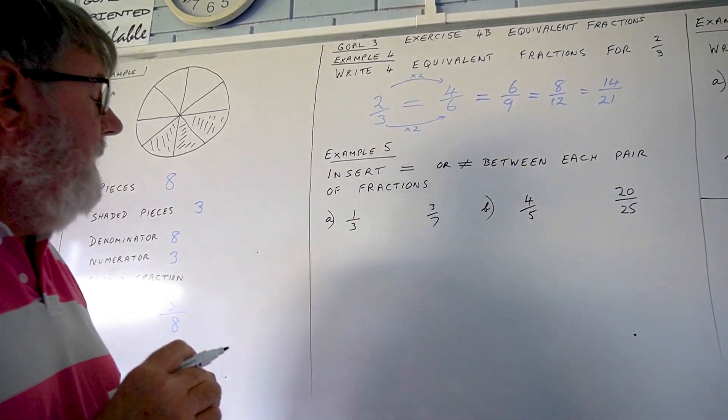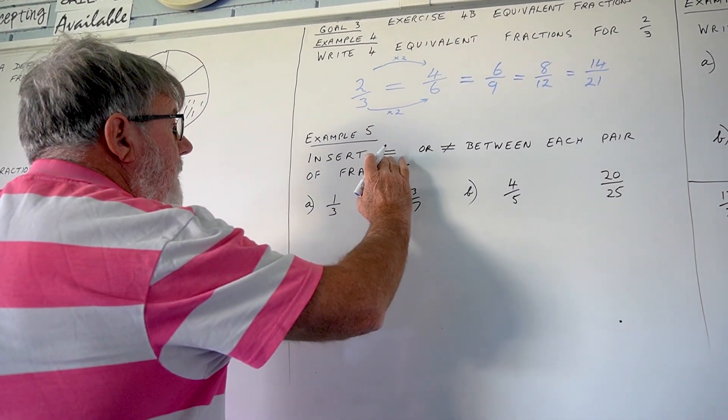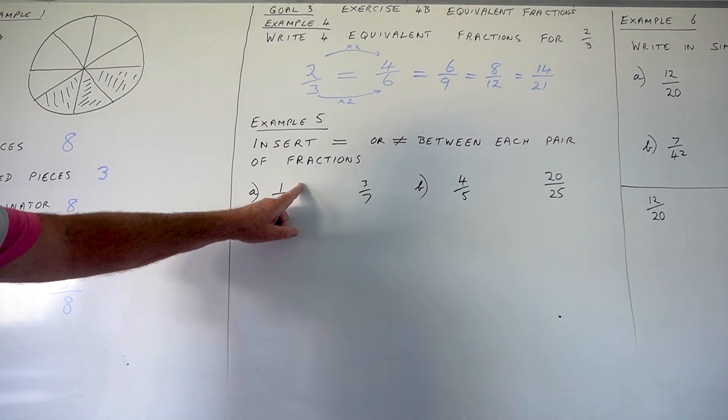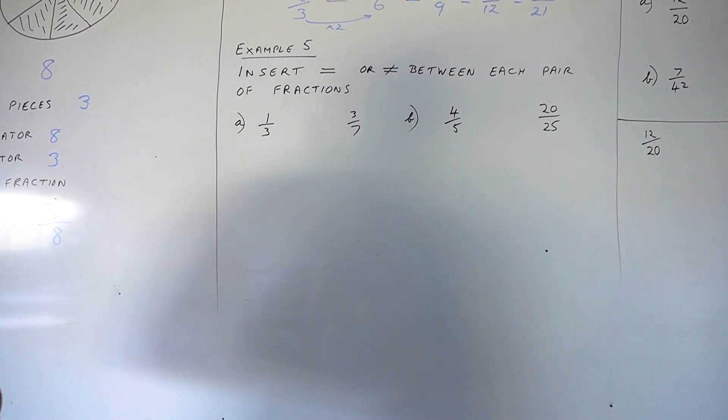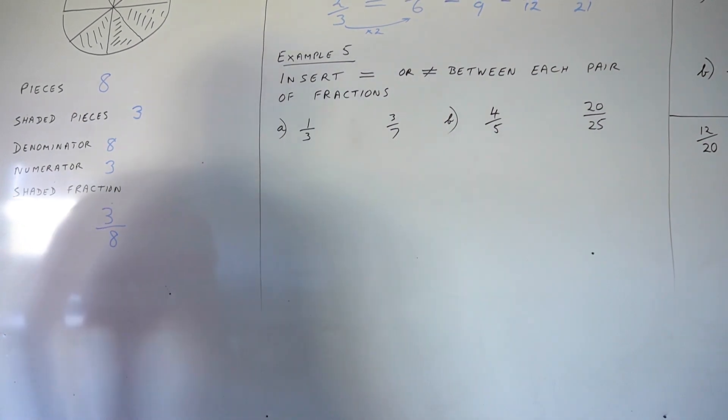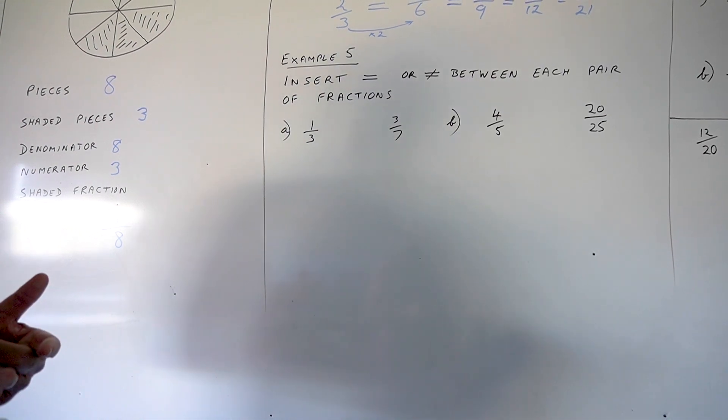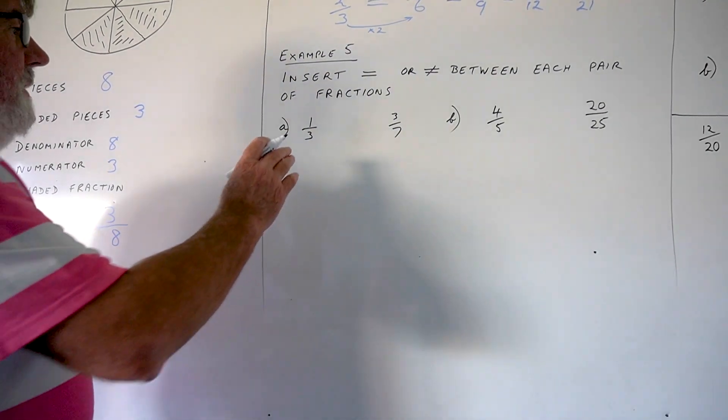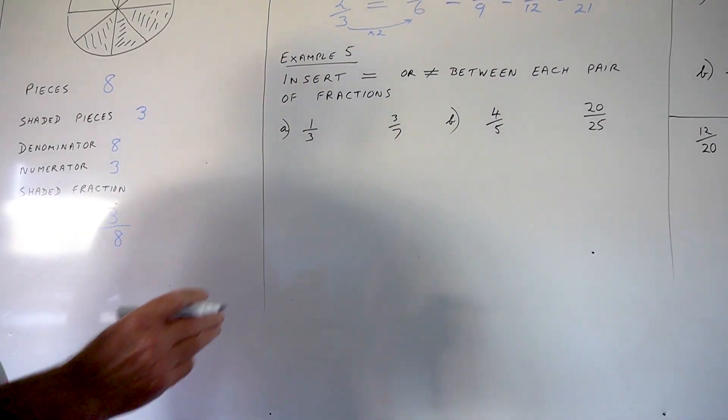In your next example, in the sheet that you should have in front of you, you are asked to insert either an equal sign or an is not equal sign between each pair of fractions. So, the question we ask is 1 third the same as 3 sevenths. Now, you might be able to look at that and say, No. But what about this one? Is 4 fifths the same as 20 over 25? To make absolutely certain that something is equal or not equal, you need to work with the lowest common multiple. Back to work we did in term 1. What is the lowest common multiple of 3 and 7? The answer is 21.